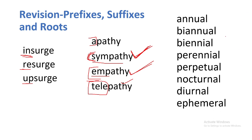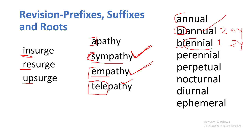Annual means yearly. Bi means two, so biannual — twice a year. Now note the distinction: biannual means twice a year, while biennial means once every two years. Do you understand? Annual is yearly, biannual is twice a year, biennial is once every two years.